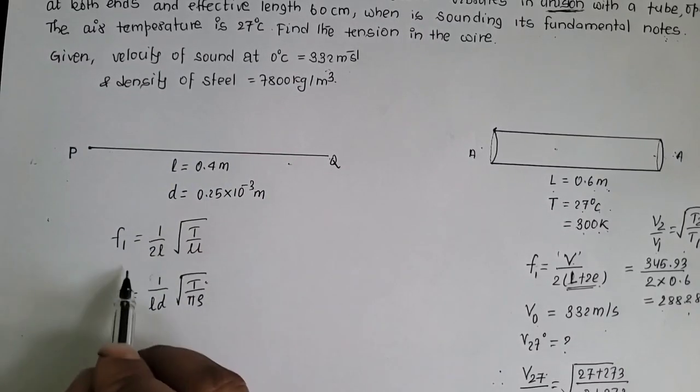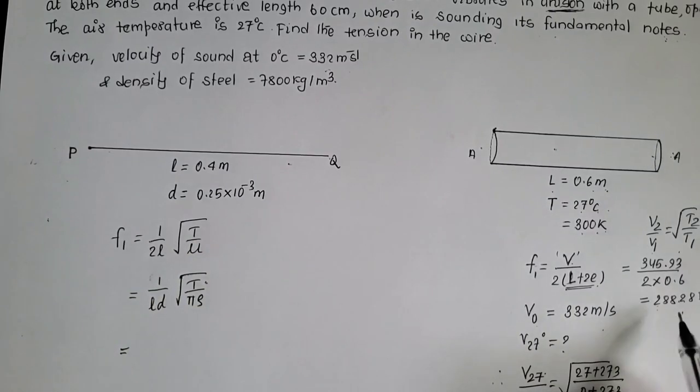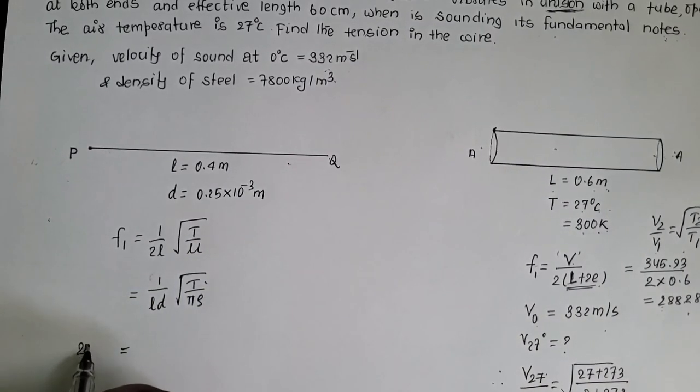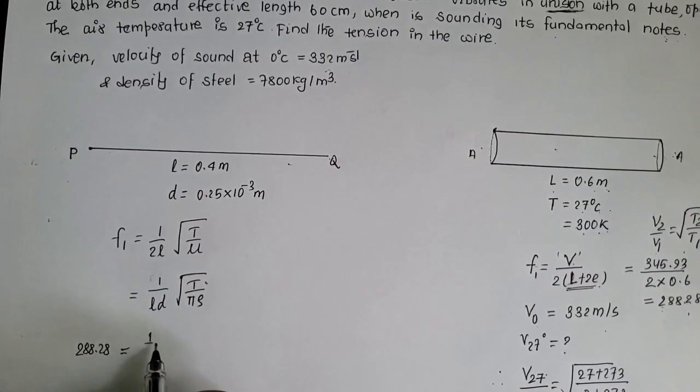Yo question mass po degosha tension applied on the string T ko value cha vanera. Abba frequency tha hamle already open pipe board of calculate gari sayegauncha isko value cha 288.28 Hz which is equal to 1 by L.